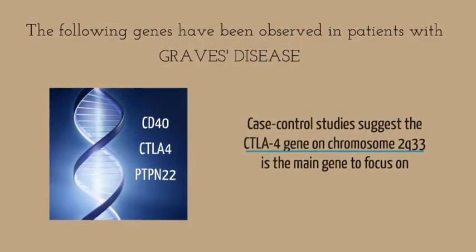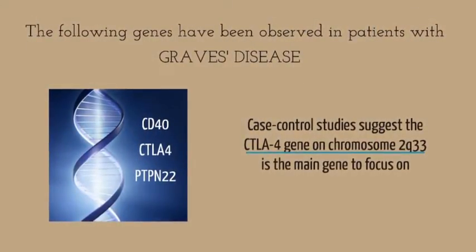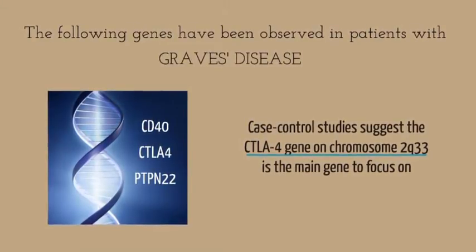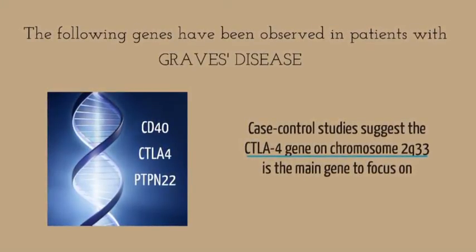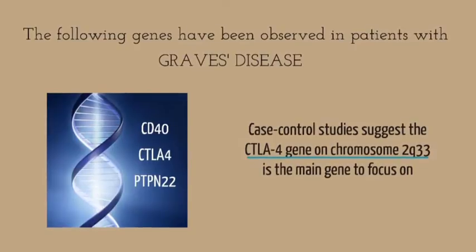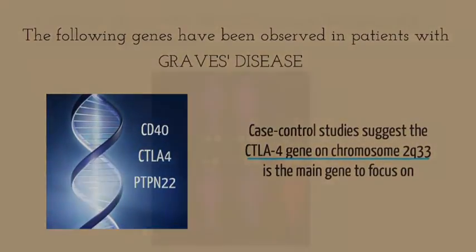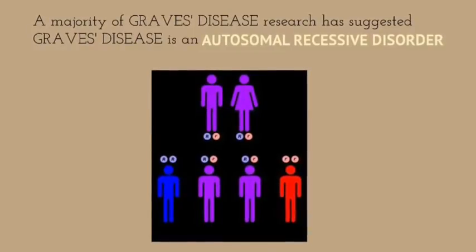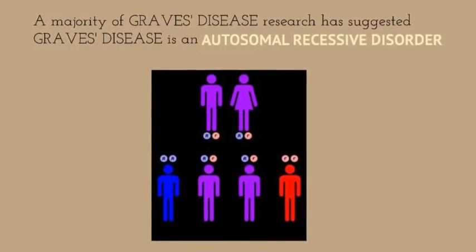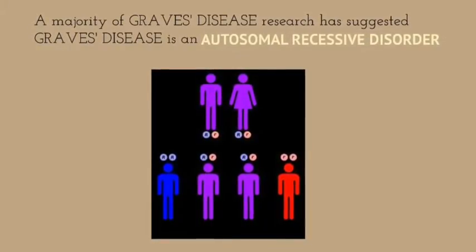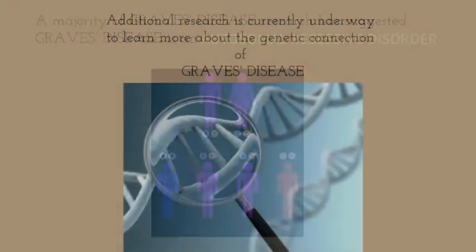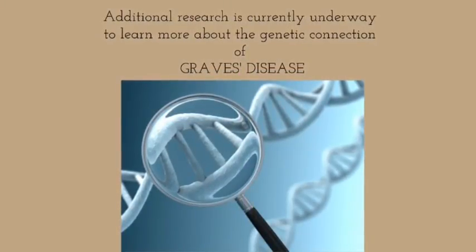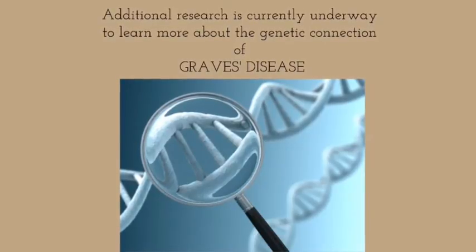The following genes have been observed in patients with Graves disease. Case control studies suggest the CTLA-4 gene on chromosome 2Q33 is the main gene to focus on. A majority of Graves disease research has suggested Graves disease is an autosomal recessive disorder. Additional research is currently underway to learn more about the genetic connection of Graves disease.